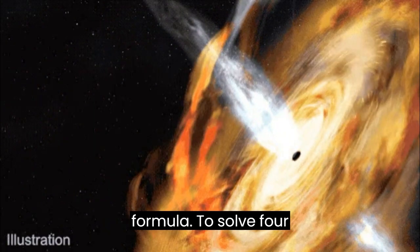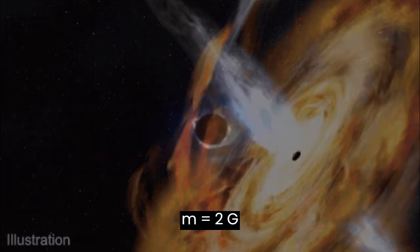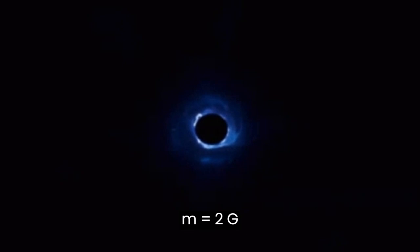We'll rearrange the formula to solve for M: M = Rs·c²/(2G).